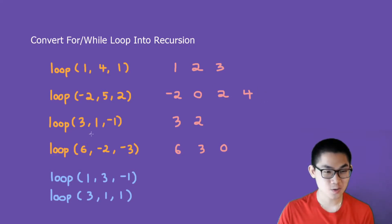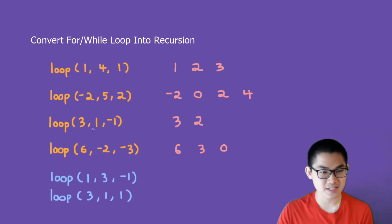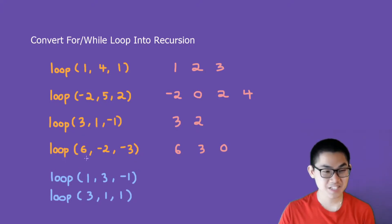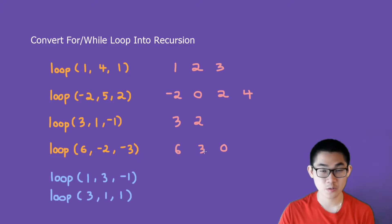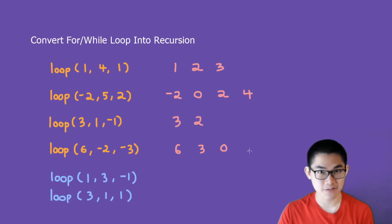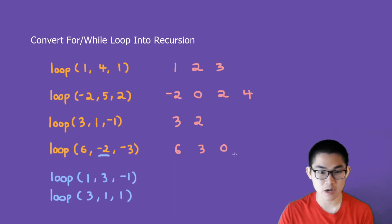As for this loop, we have 3, 1, and minus 1. This means we start at 3, so we decrement by 1 every time. So 3 goes to 2, and then we don't print out number 1 because that's the number we don't want to print out. The last one says 6, minus 2, and minus 3. So we start at 6, then we minus 3 every time, so 6 becomes 3, 3 becomes 0, and if we decrement by 3 again it will be negative 3. But that is smaller than minus 2, so that's why we stop here and we don't print out anything.